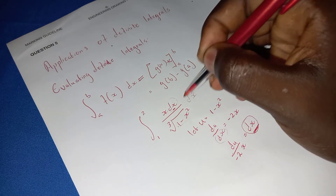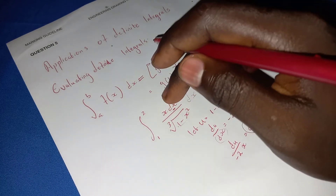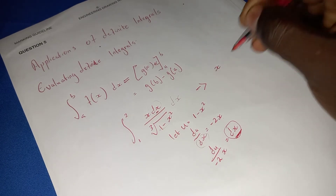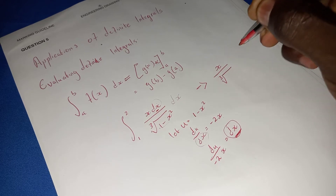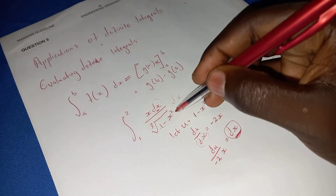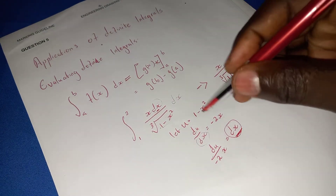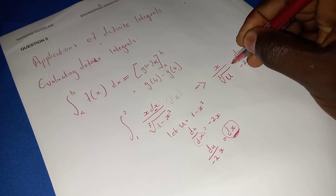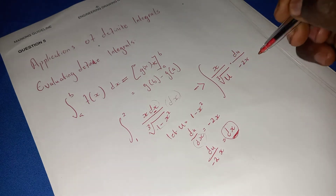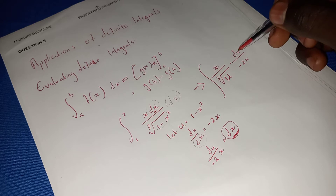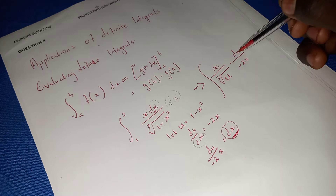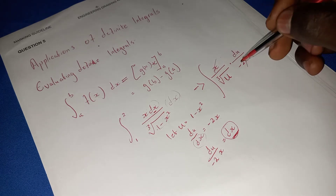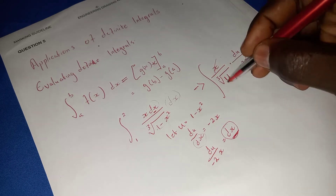Now substitute dx into the equation. The equation becomes x over 3, with u under the radical, multiplied by du over negative 2x. The x in the numerator and the x in the denominator cancel, leaving you with 1 over negative 2 outside the integral.